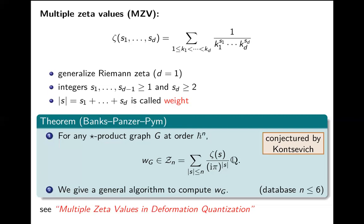In the earlier example, the n=6 graph had a rational part (weight zero) plus ζ(3)²/π⁶ — where π⁶ in the denominator corresponds to weight 6, and ζ(3)×ζ(3) is weight 3+3=6 — consistent with the general statement. The higher the order in ℏ, the higher the weight of the MZVs that appear.